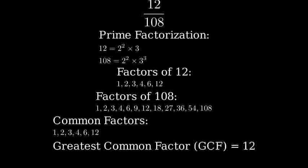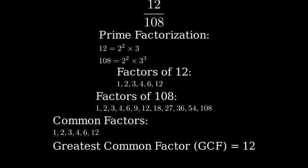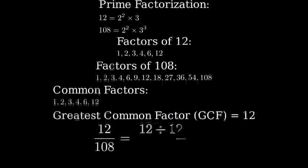Now let's identify the common factors between 12 and 108. The common factors are 1, 2, 3, 4, 6, and 12. Looking at this list, we can see that 12 is the greatest common factor.